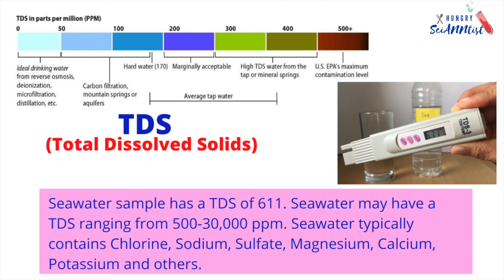Seawater sample has a TDS of 611. Seawater may have a TDS ranging from 500 to 30,000 ppm. Seawater typically contains chlorine, sodium, sulfate, magnesium, calcium, potassium, and others.